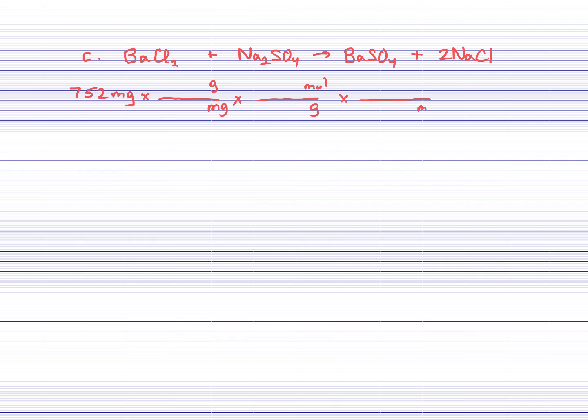And then we can change our moles of sodium sulfate to moles of what we're looking for, which is our barium chloride. Okay, so 1 over 1,000. Our molar mass is 142.05. The ratio is 1 to 1. So this will give us 0.00529 moles of our barium chloride.